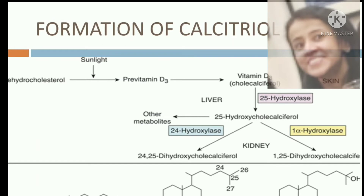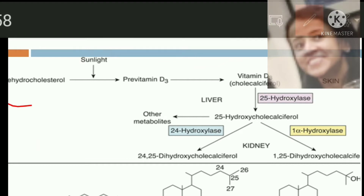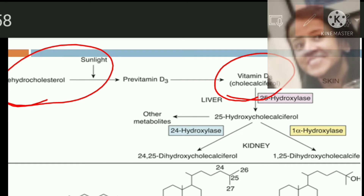The formation of calcitriol begins with the precursor of vitamin D that is present in the skin in the form of 7-dehydrocholesterol, as you can see in this diagram. When ultraviolet rays of the sun fall on this 7-dehydrocholesterol, it is converted into cholecalciferol, that is vitamin D3.